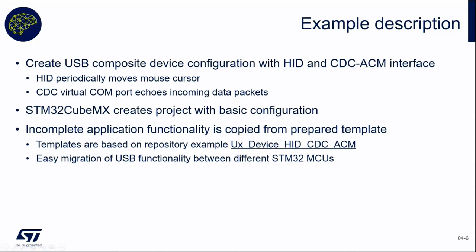Apart from building a composite device, in terms of functionality we are going to test the two classes: for HID, by seeing the mouse moving periodically — it's moved from the HID device, so it's acting as a mouse — and the CDC virtual COM port is going to echo the incoming data packet. For this part you will need a second USB cable connected to CN13, which is the USB connector on the opposite side of the ST-Link.